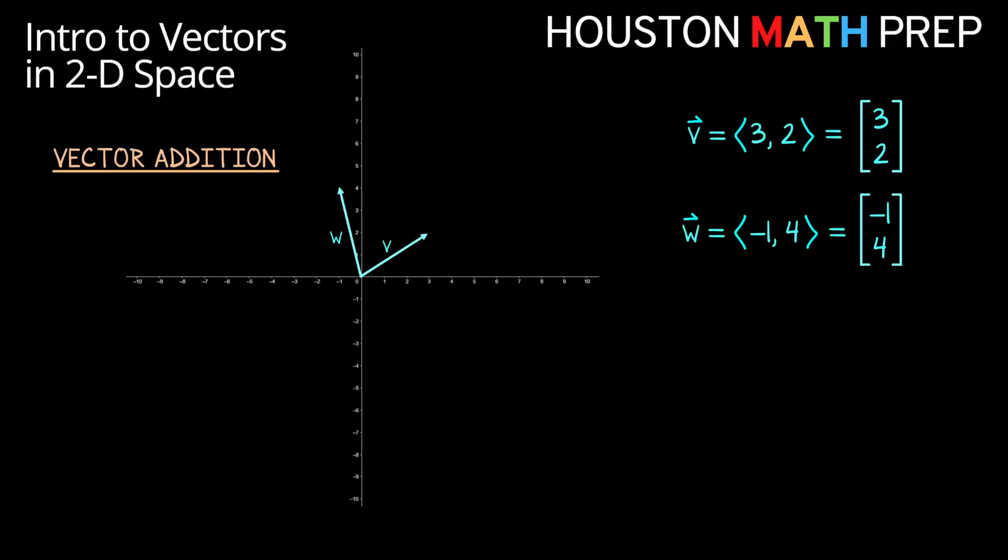Vectors in 2D space is nice because we can visually represent them pretty easily. Here we've defined two vectors. One of them we're calling vector V, and its components are 3 and 2. We also have another vector named W with components negative 1 and 4, and we've got them sketched in the xy plane over here.